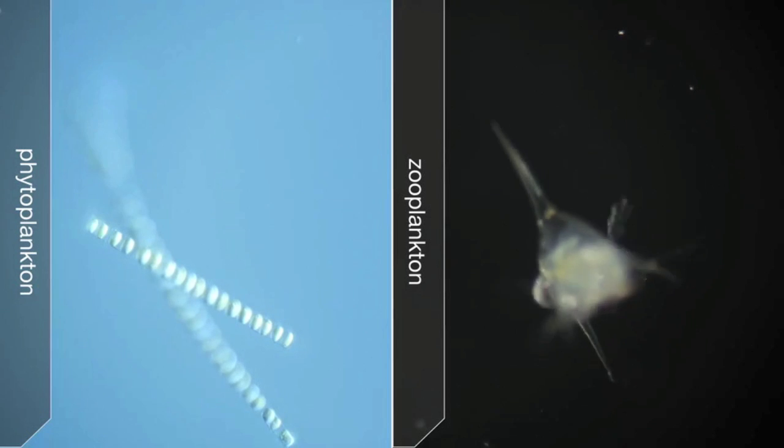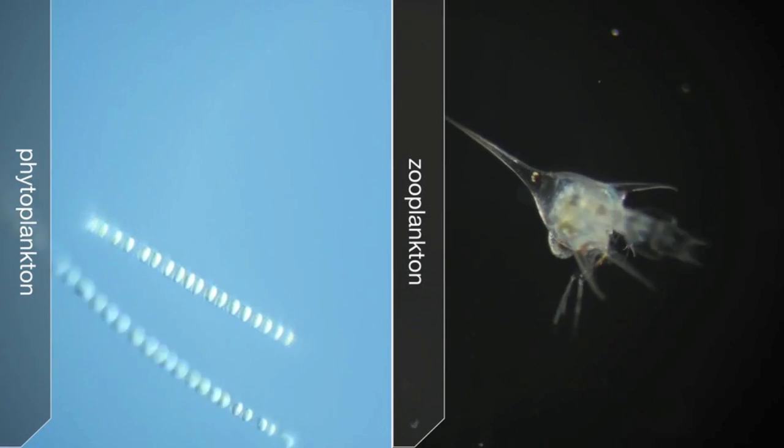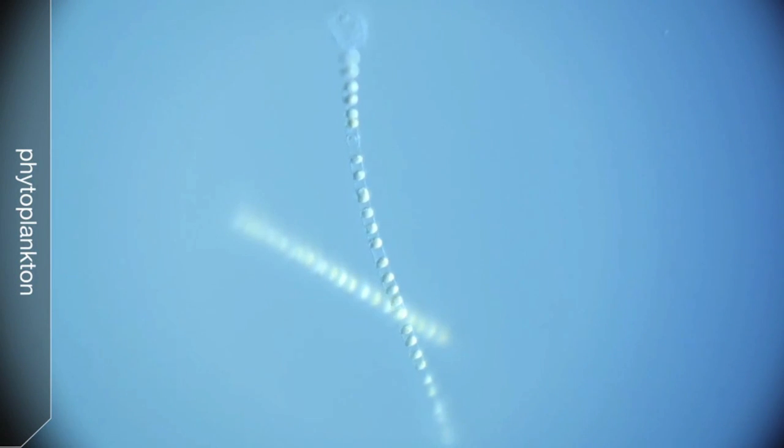Globally, it is estimated that the sea temperature rise will cause phytoplankton and zooplankton biomass to decrease by six percent and eleven percent.